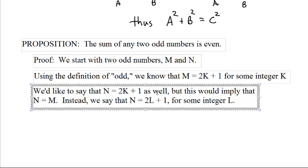But if n is 2k plus 1, and m is 2k plus 1, those are exactly the same. That only would happen if m and n are equal. So n is probably 2 times some different number plus 1. So n is 2l plus 1.